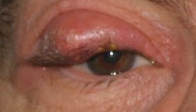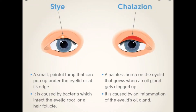Rarely, the whole eyelid might swell. So what's the difference between a stye and chalazion? Sometimes it can be difficult to tell the difference. A stye is very painful, often appears at the eyelid edge, usually caused by an infected eyelash root, and often swells — sometimes affecting the entire eyelid. Chalazion is not usually painful; it is a bump that usually develops farther back on the eyelid than a stye. It is caused by a clogged oil gland and rarely makes the entire eyelid swell.